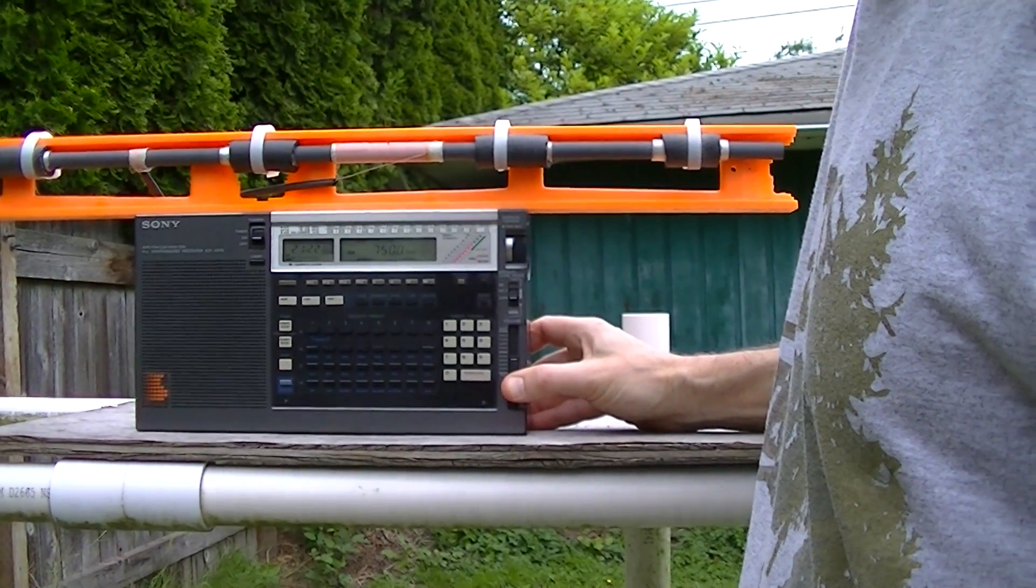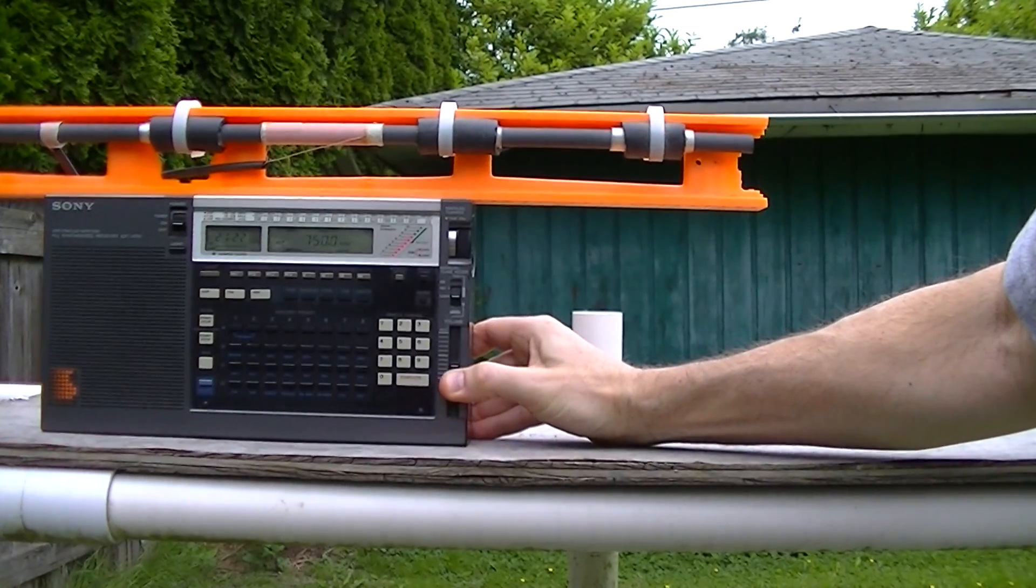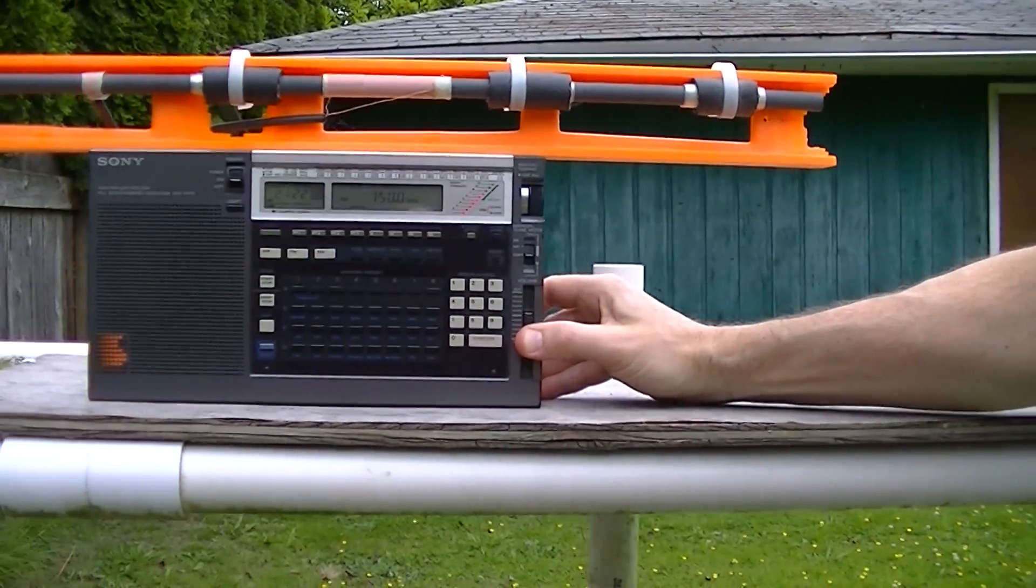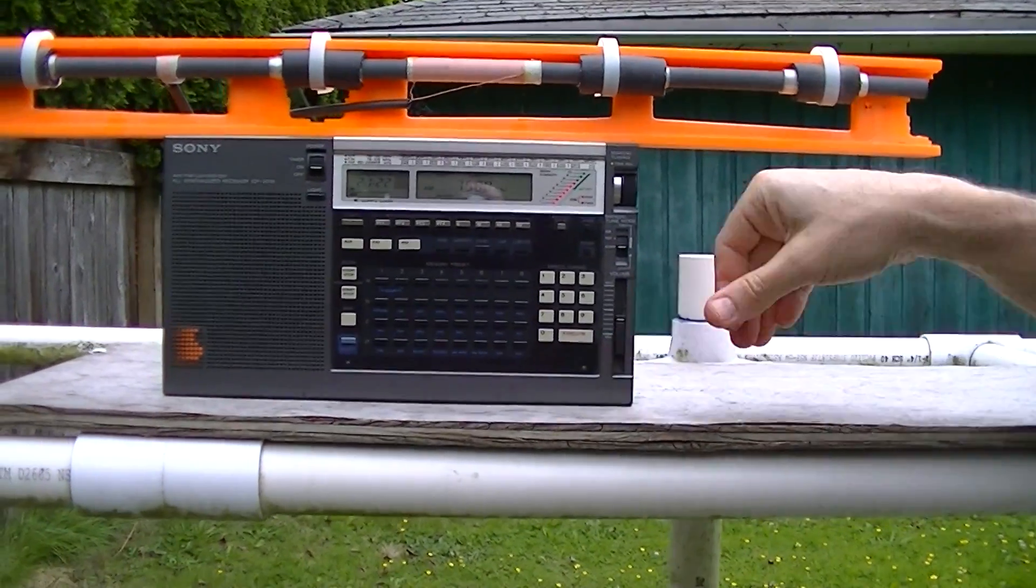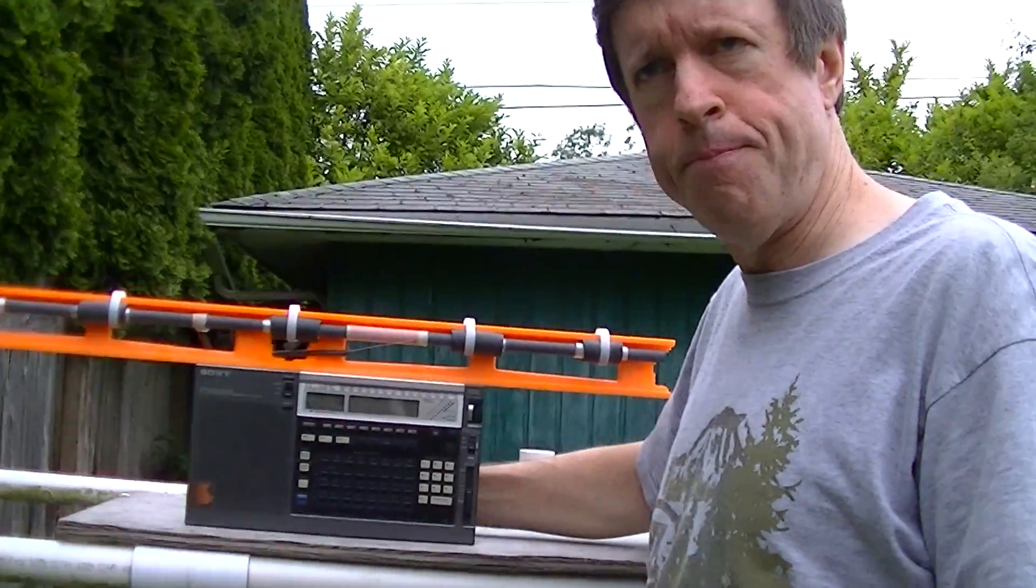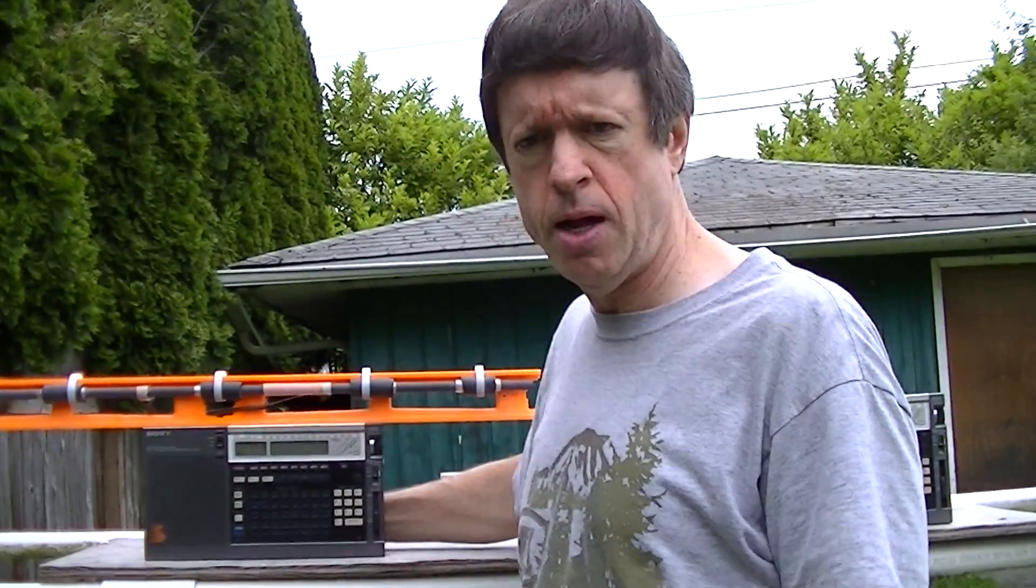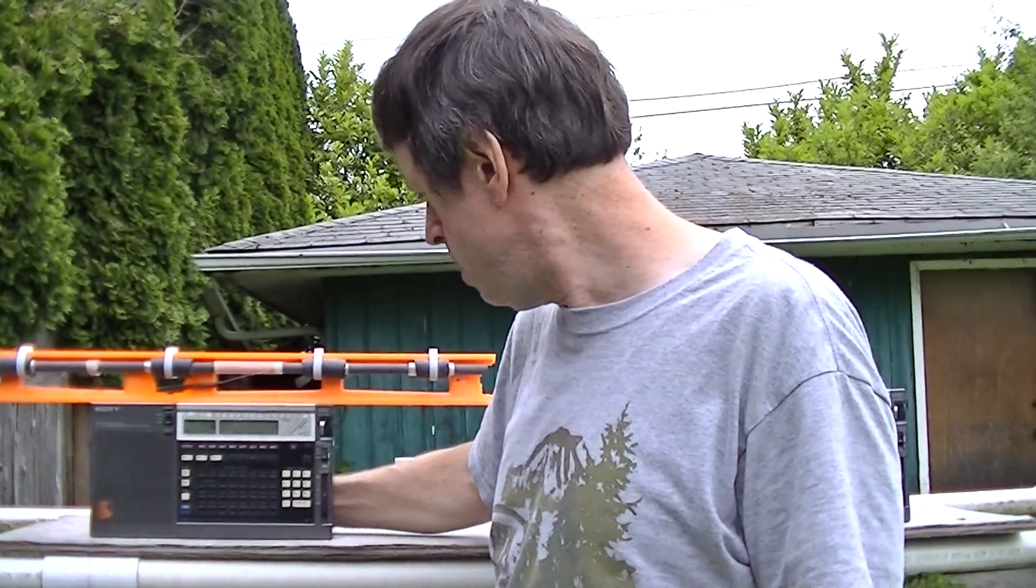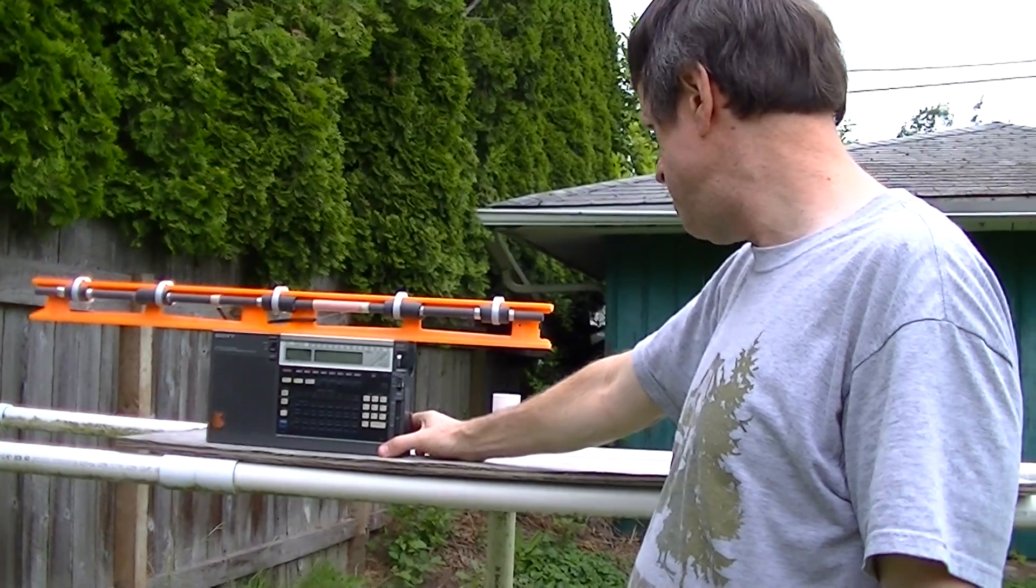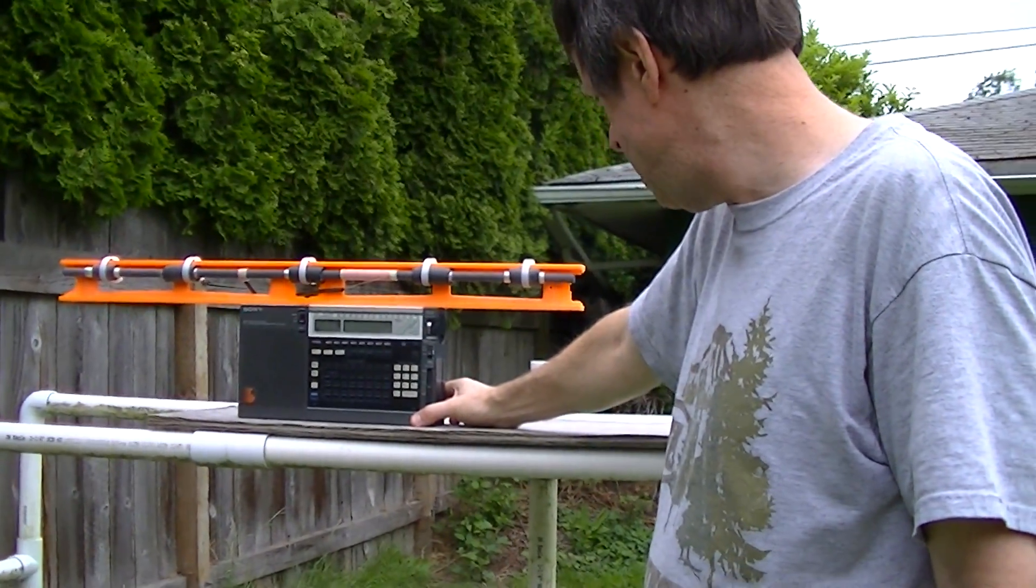And this is also in the sync mode, so I've shown you how the basic model receives 750 KXL at a two LED level. The modified ICF 2010 with the 30-inch loop stick does receive it at a seven LED level.